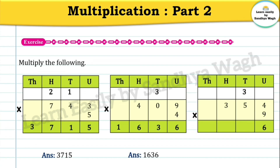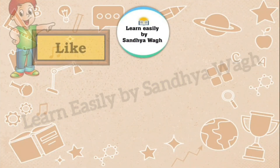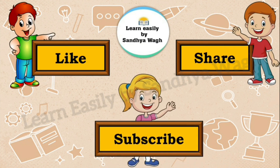Nine 5s are 45, plus 3 carry gives 48; write 8 in the tens place and carry 4. Nine 3s are 27, plus 4 carry gives 31; write 1 in the hundreds place and carry 3 to the thousands place. Our final answer is 3186. That's all for today — we will meet again in our next video. Till then, keep learning, keep enjoying. Bye bye!